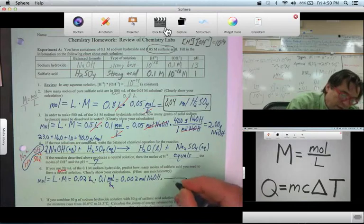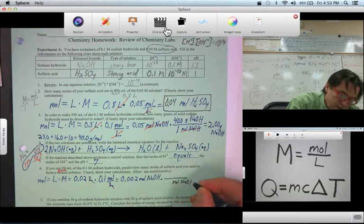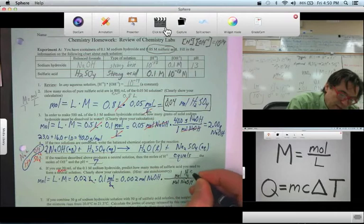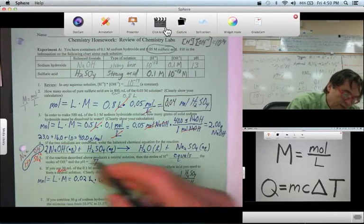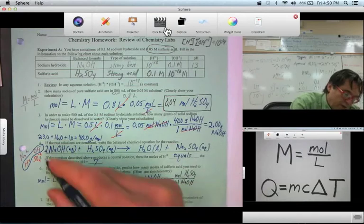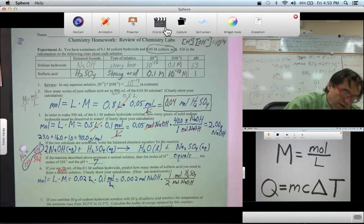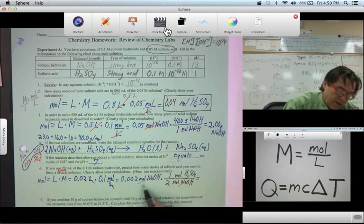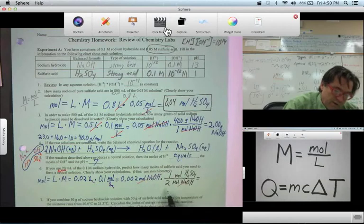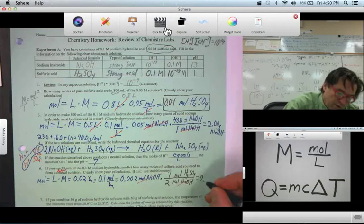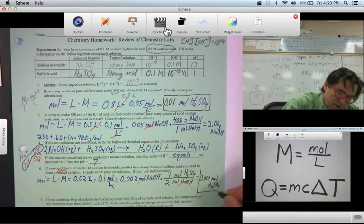So we get out of moles of NaOH and we get into moles of sulfuric acid H2SO4, and we see two moles of NaOH react with one mole of H2SO4. Cancel our units, and we get the answer. 0.002 divided by two is 0.001 mole of sulfuric acid H2SO4. And there is that answer. Okay, next.